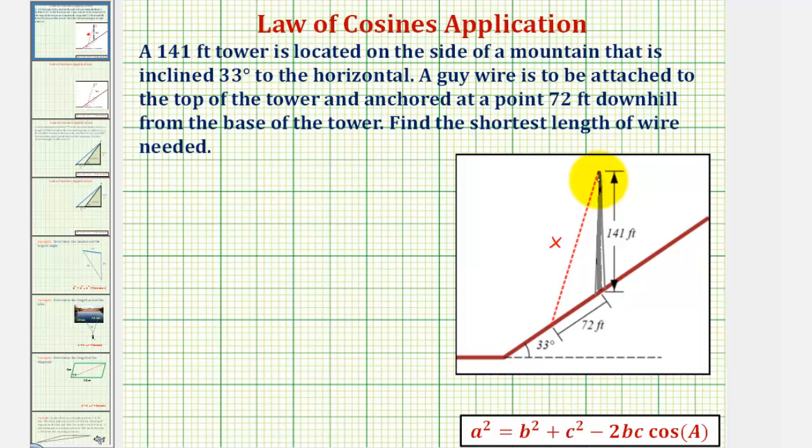Notice how if we focus on this obtuse triangle here, if we knew the measure of this obtuse angle formed by these two sides, which we know the length of, we could use the law of cosines to determine the length of x. So let's first focus on determining this obtuse angle in this obtuse triangle.